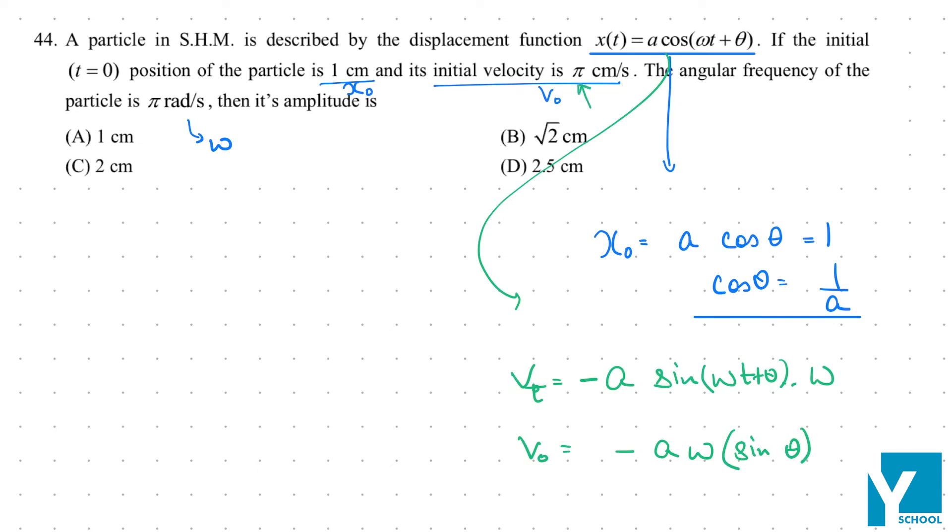Now v0 value we know, that is π. We have minus a ω value, and sin θ is equal to minus 1 by a.